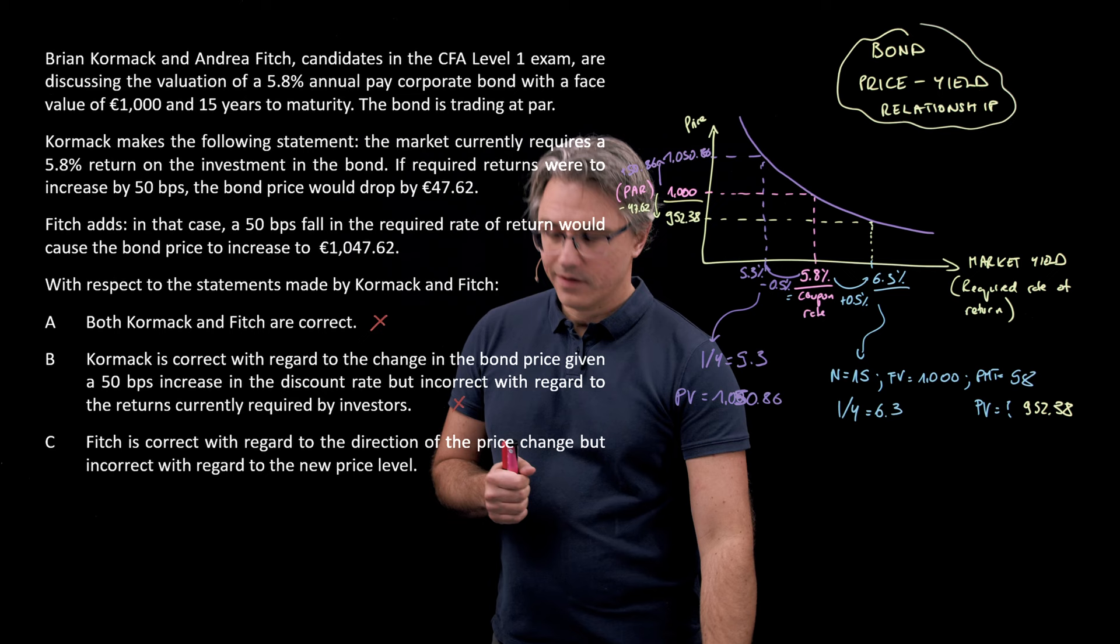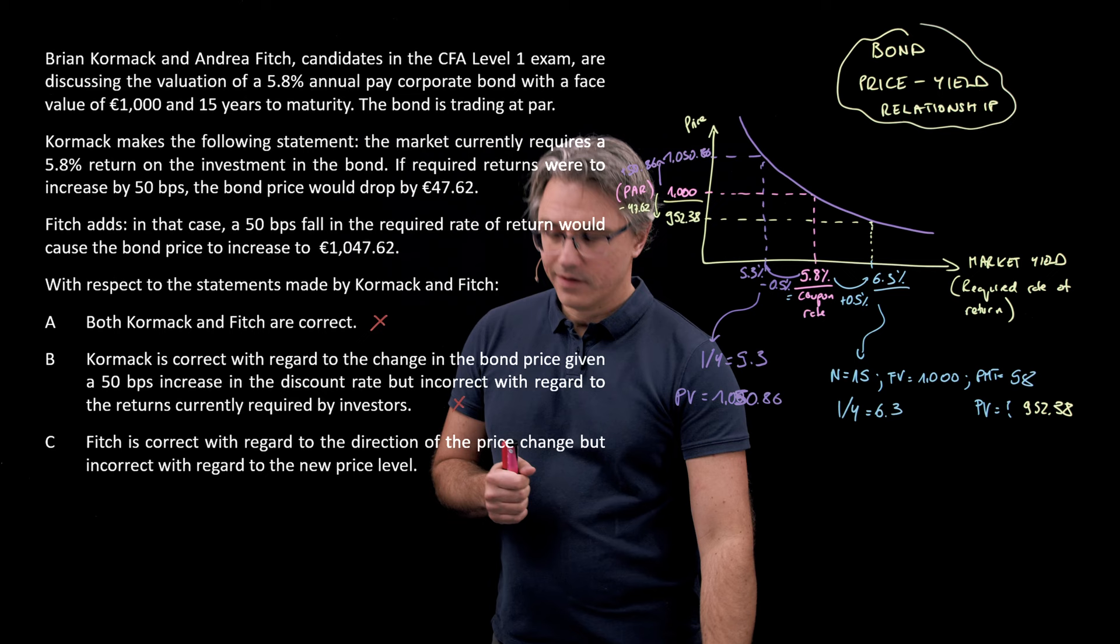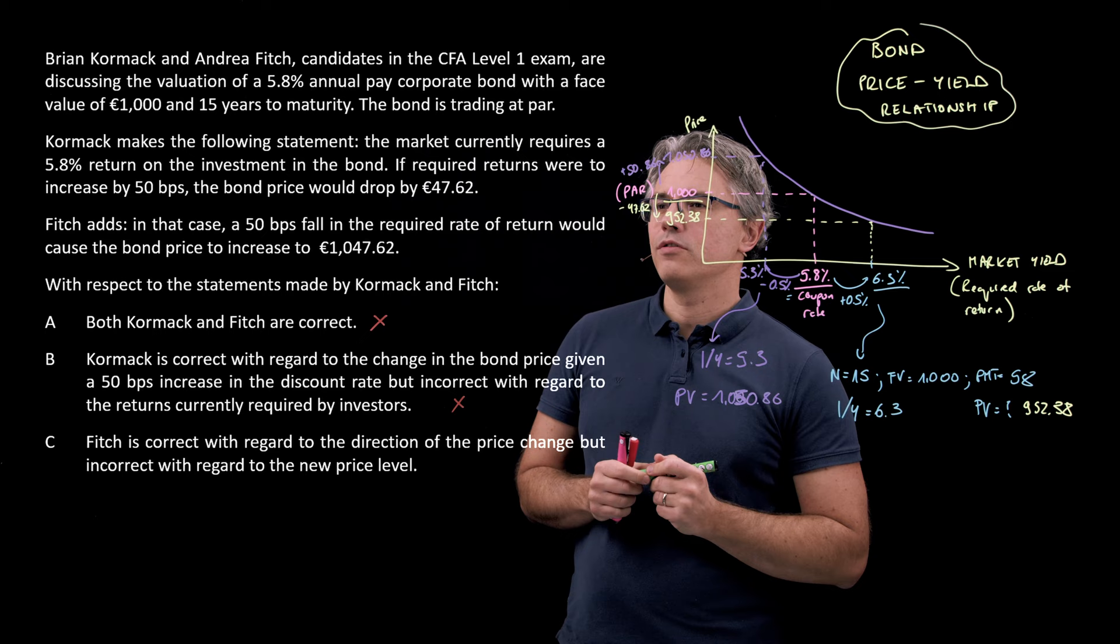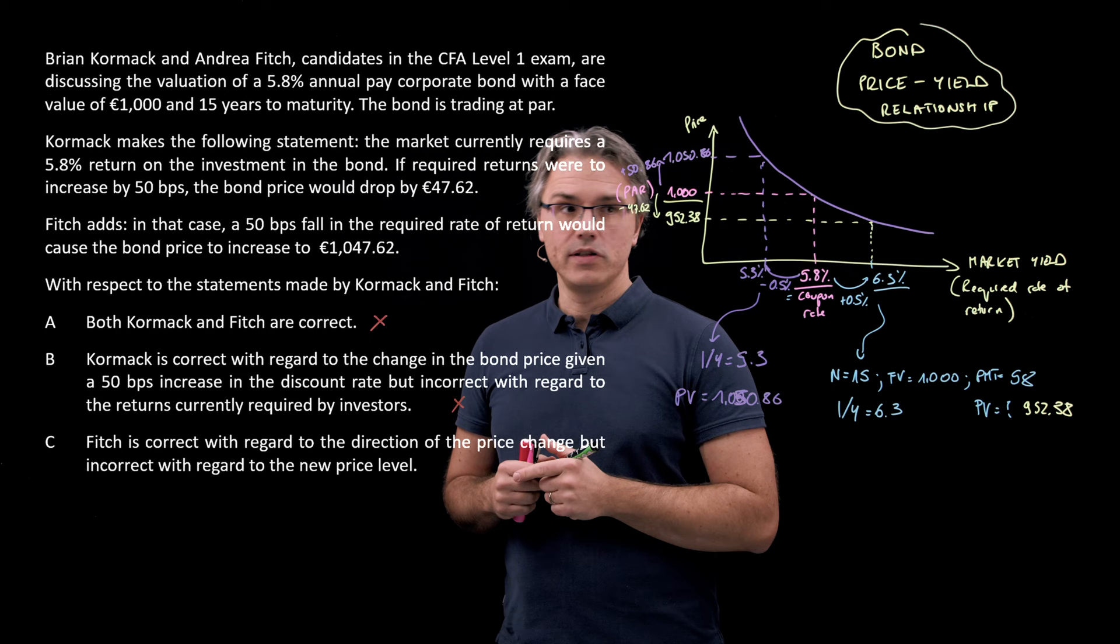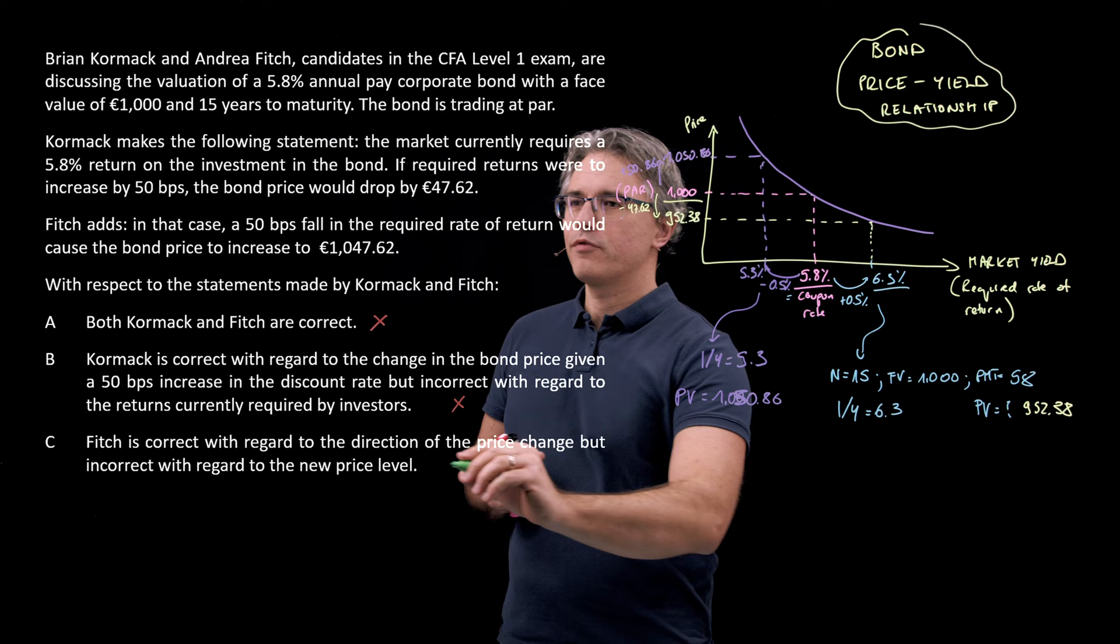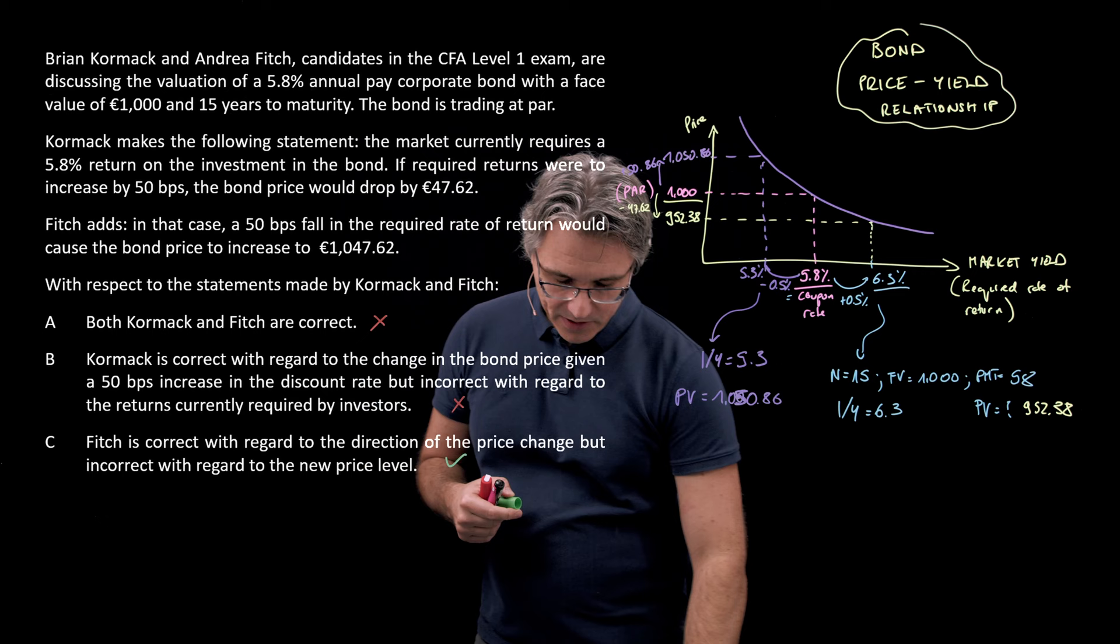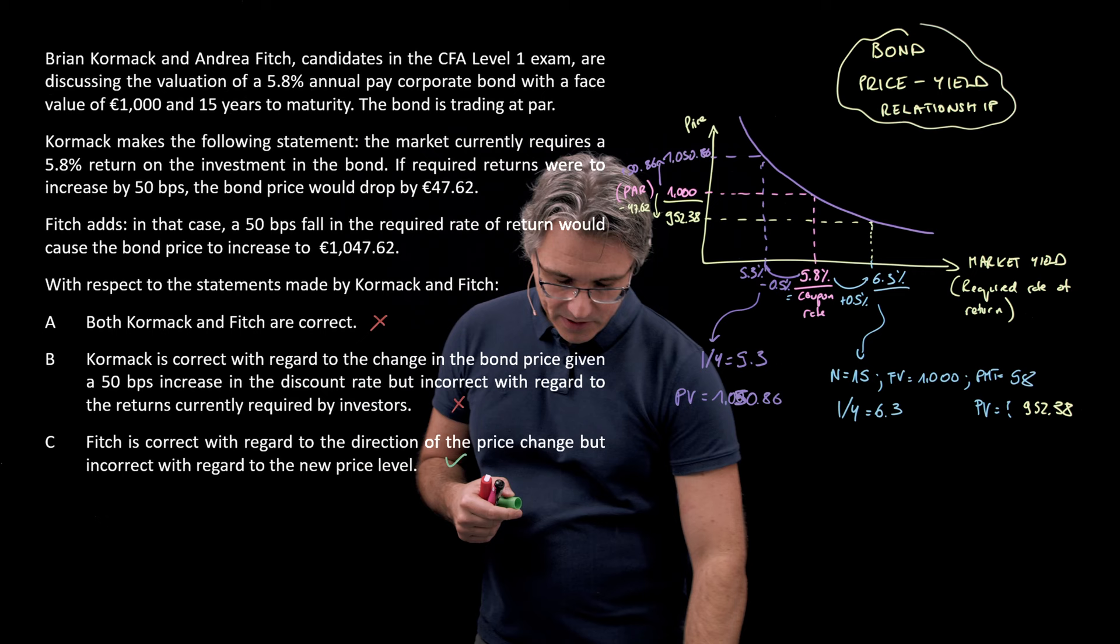And Fitch, this is answer C. Fitch is correct with regard to the direction of the price change. And Fitch says in case of a 50 basis point fall, the bond price would increase. She's correct in terms of the direction of the change, but incorrect with regard to the new price level. This statement is absolutely fine. So it's statement C that becomes the correct answer to this question. Let me write it down maybe over here. Yes, that's the correct one.